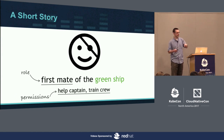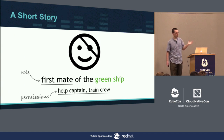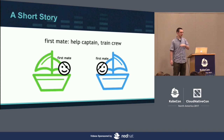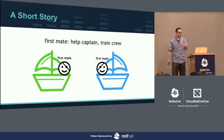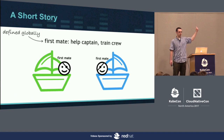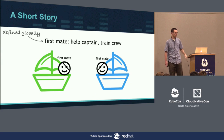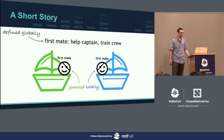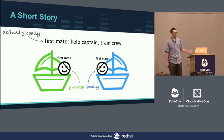That role is granted at a particular location, so he has that role on the green ship. Now, there are lots of ships. Every ship has a first mate. It makes sense for the permissions to be uniform across the ships, so we're going to define the first mate role globally — it means the same thing across all the ships — but we grant it locally. So Bob can only do first-matey things on the green ship. Defined globally, granted locally.